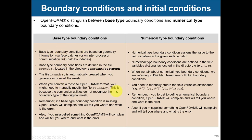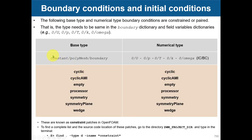To reiterate: you have base-type boundary conditions that you set in the file constant/polyMesh/boundary. You set this base type, and then the numerical type you set in the zero folder — so you have U, P, k, omega, T, whatever you are solving. Here you give the numerical value: velocity, pressure value, whatever. And in constant/polyMesh/boundary you set the base type: whether it is a patch, a wall, empty, or symmetry, and you also set the name.